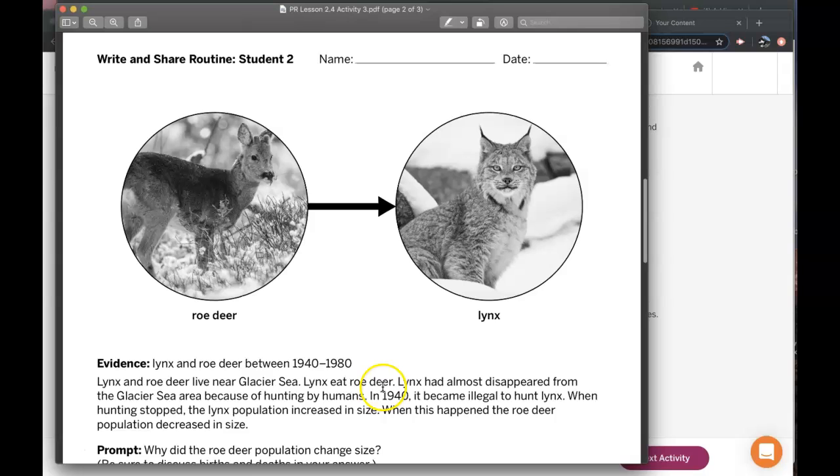After that, hunting lynx became illegal, so the population of lynx increased. Then they would eat more roe deer because there were more of them, and so the roe deer population decreases.